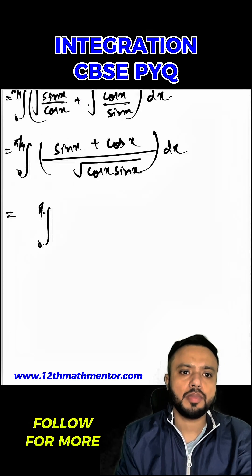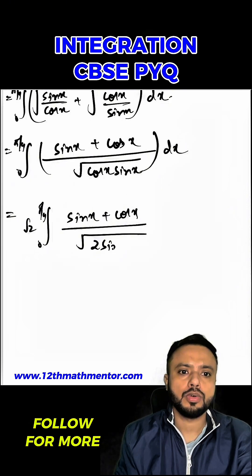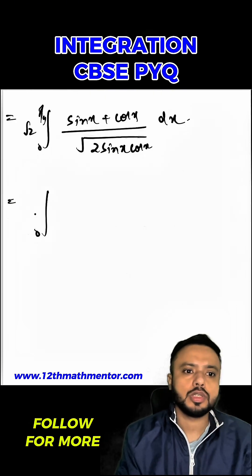Now I will multiply and divide the numerator by root 2, so I'll get root 2 sine x plus cos x upon root of 2 sine x cos x dx, so 0 to pi by 4.